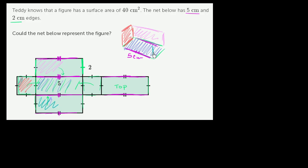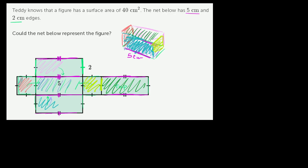When we fold this side in, that's the side facing us. And then we fold this side in, and that would be that side. Then we have the top connected right over here, and the top goes on top of our rectangular prism. So that's the figure — it's 5 centimeters in this dimension, 2 centimeters tall, and 2 centimeters wide.